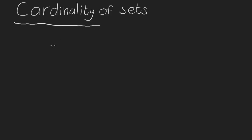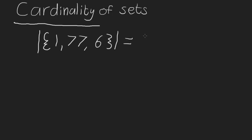The word cardinality is just a fancy way of saying the size of a set, or the number of elements in a set. So let's say we have the set {1, 77, 6}. The cardinality of this set is the number of elements in here — there are 3 elements, so the cardinality is 3. The way we write that down is with vertical bars around the set, which is the notation most commonly used to denote the cardinality of a set.